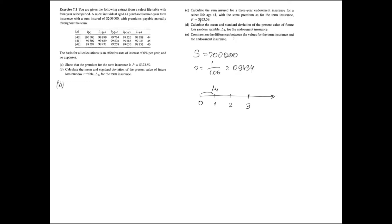If the policyholder has survived to time 1, then the value of random variable L1 is still life-contingent — that is, it depends on whether the policyholder survives the remaining term period or dies in the second or third year. We write down the present value random variable L1 considering three possible scenarios. If the policyholder dies somewhere between time 1 and time 2, then benefits will be paid out at time 2 by the insurance company, but the policyholder will still have to pay the premium at time 1. Note that we discount all cash flows at time 1, not at time 0.